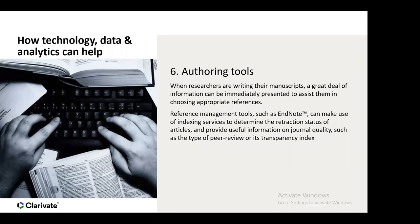In terms of authoring tools — ensuring that researchers when writing manuscripts are able to correctly reference and cite the work they're using. One of the tools within Clarivate is called EndNote, and there are several others. It helps ensure references are correctly cited and stored. Researchers can also use indexing services to understand which articles may have been retracted and to ensure journal quality from the research they're citing.